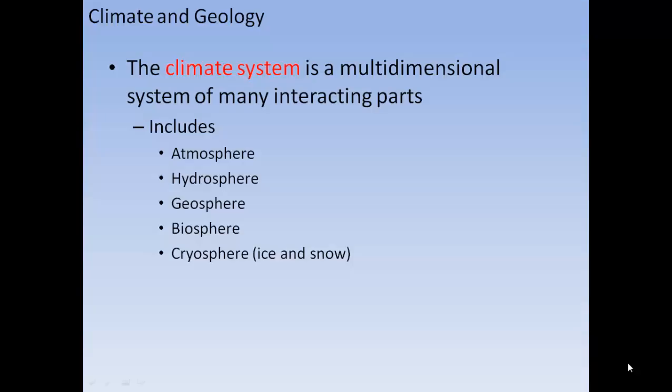Global Climate Change: Climate and Geology. The climate system is a multi-dimensional system with many interacting parts, which include the atmosphere, the hydrosphere, the geosphere, the biosphere, and also the cryosphere — ice and snow.